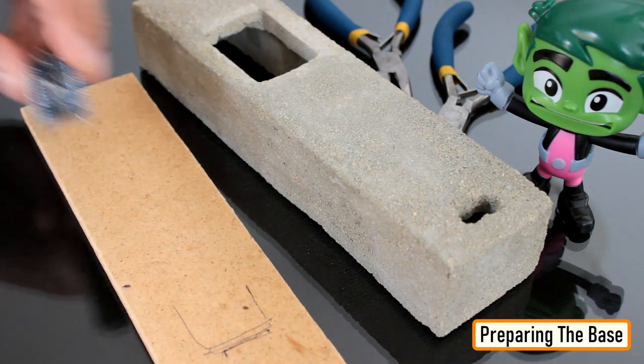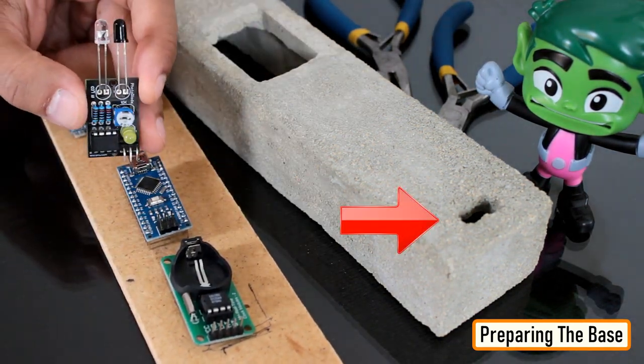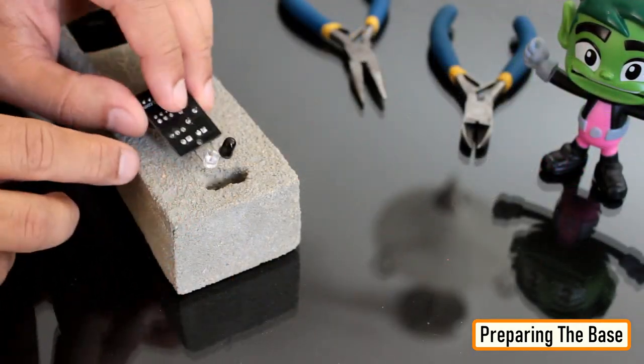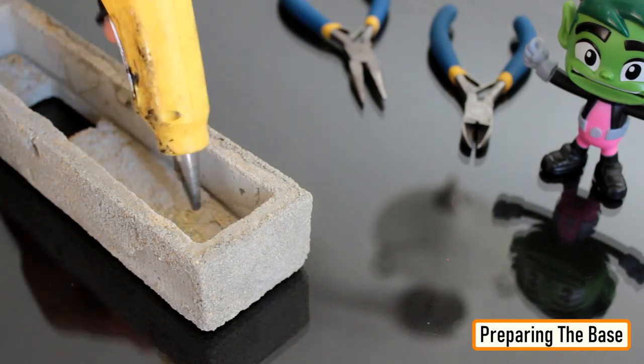Now let's install the rest of the electronic components inside the base of the clock. I used the same compressed wooden board to create the base plate and then one by one soldered and hot glued all the electronic components to it.